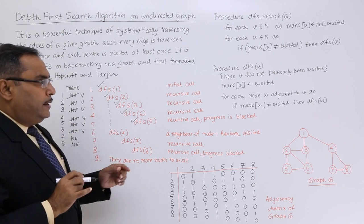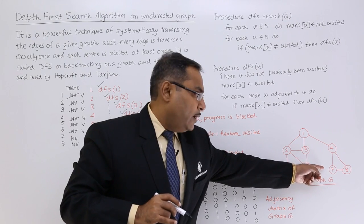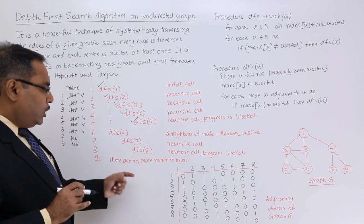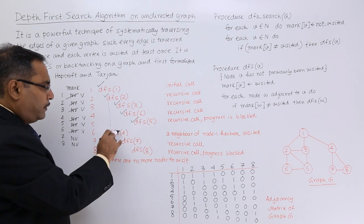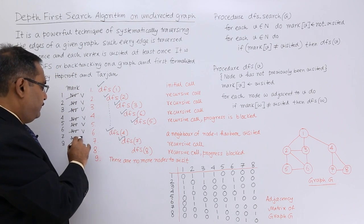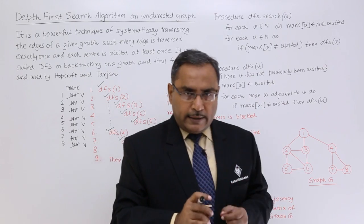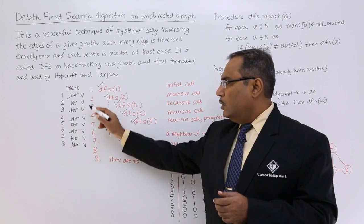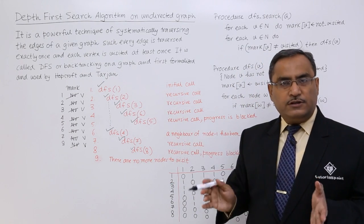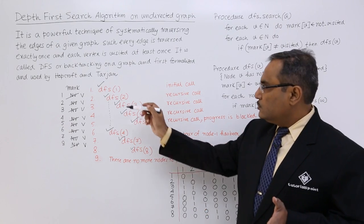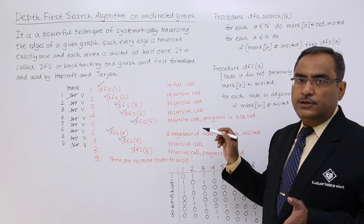Node 4 has two unvisited adjacent nodes: 7 and 8. DFS(7) is called first, marking node 7 as visited. Then from node 7, DFS(8) is called, marking node 8 as visited. Now all nodes have been visited. When the algorithm retraces back to DFS(1), it finds no more unvisited nodes in the mark array, so there are no more nodes to visit and the algorithm terminates.